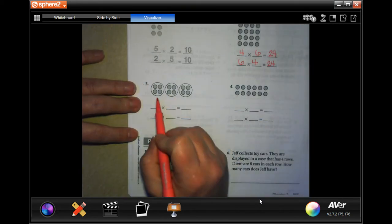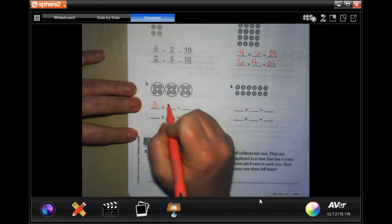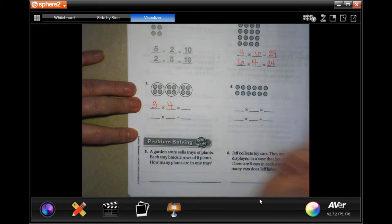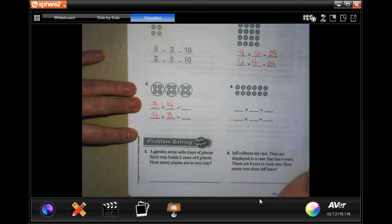So the next one, we have 1, 2, 3 groups. And there's 1, 2, 3, 4 in each group. So on the next one down, I'm going to put the same numbers, just opposite.